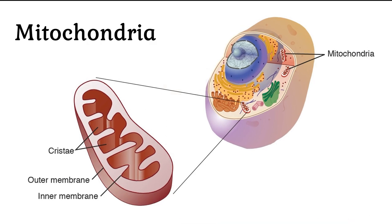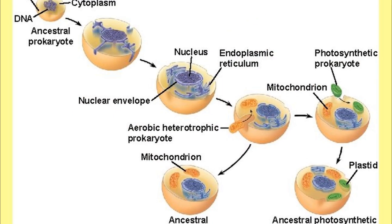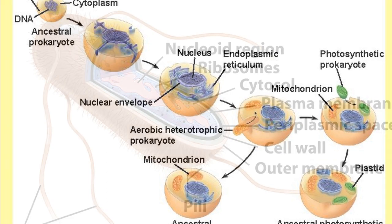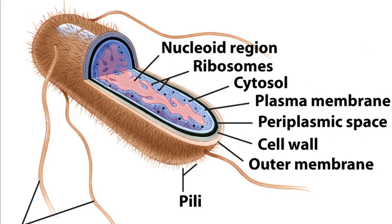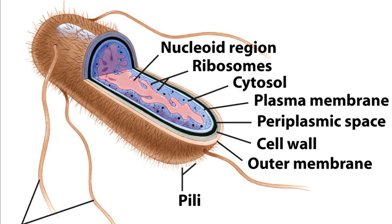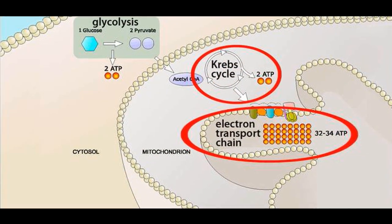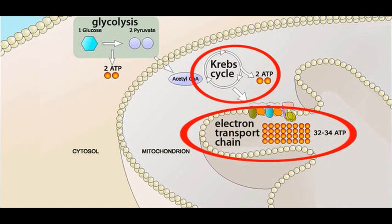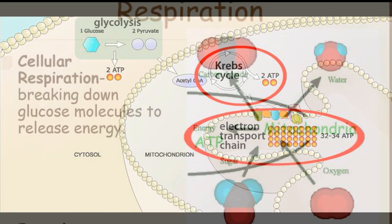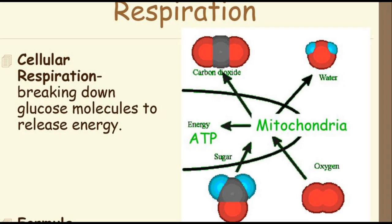Mitochondria – The mitochondria (singular: mitochondrion) are tiny bodies of varying shapes distributed in the cytoplasm. Each is bounded by a double membrane envelope. The inner membrane is thrown into folds known as cristae. Mitochondria are the sites of cellular respiration. Respiration releases energy; hence, the mitochondria are also known as the powerhouse of the cell.